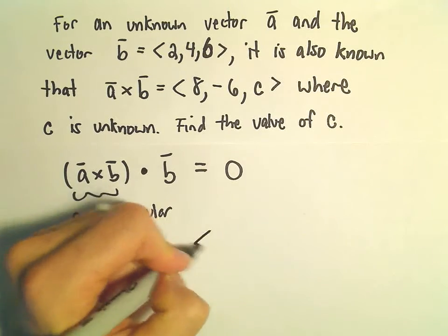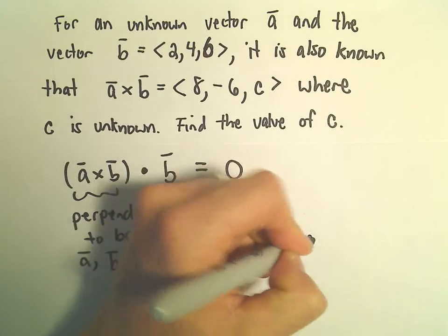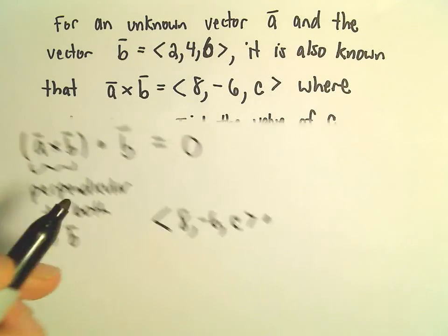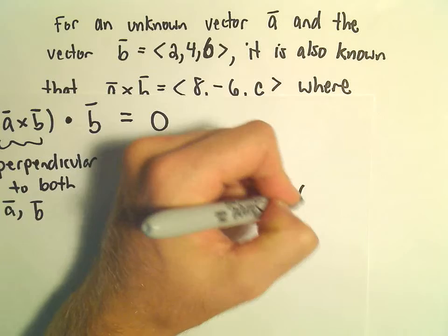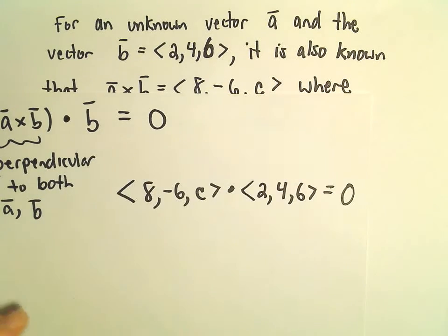A cross B has components 8, negative 6, c. We can dot that with vector B, which has components 2, 4, 6. And we know at the end of the day this has to equal 0.